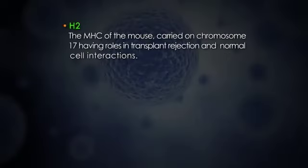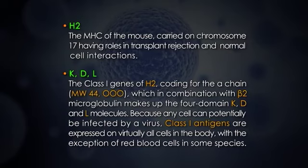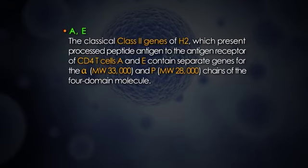The MHC of the mouse is carried on chromosome 17 and has roles in transplant rejection and normal cell interactions. The class 1 genes of H2 encode a chain of molecular weight 44,000, which in combination with beta-2 microglobulin makes up the four-domain K, D, and L molecules. Because any cell can potentially be infected by a virus, class 1 antigens are expressed on virtually all cells in the body, with the exception of red blood cells in some species. The classical class 2 genes of H2, which present processed peptide antigen to the antigen receptor of CD4 T cells, include A and E, containing separate genes for the alpha chain (molecular weight 33,000) and beta chain (molecular weight 28,000).